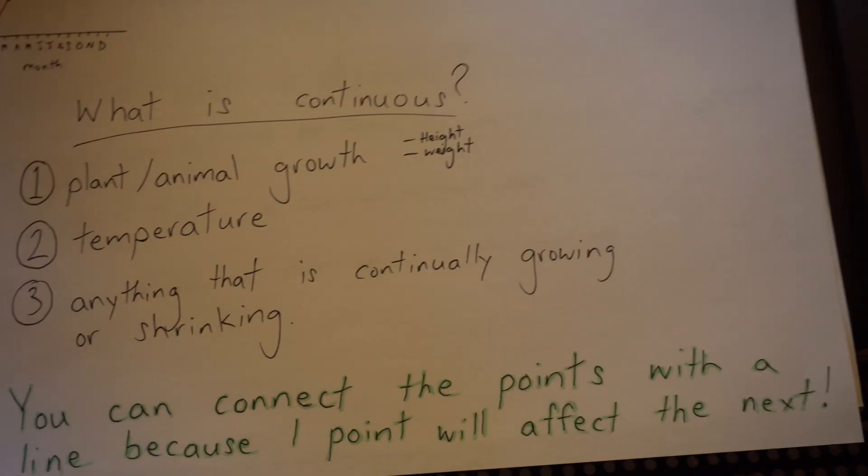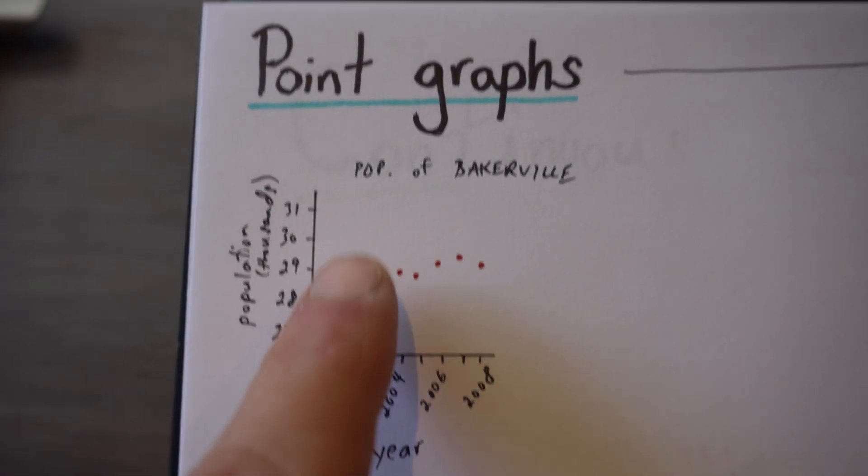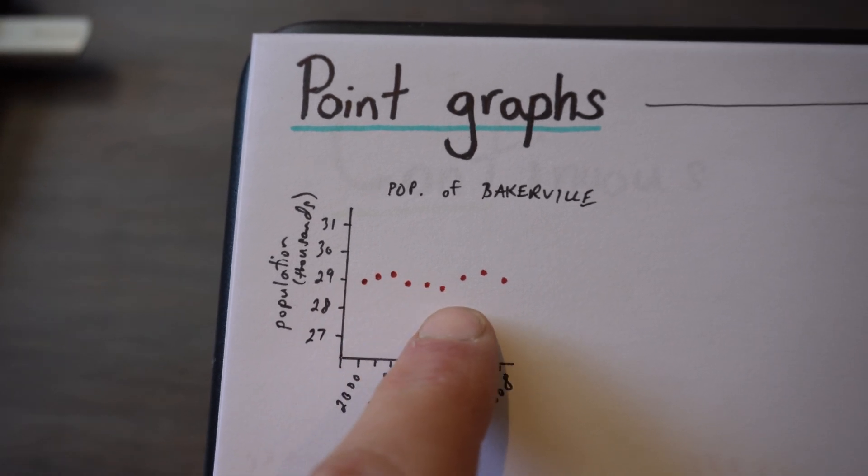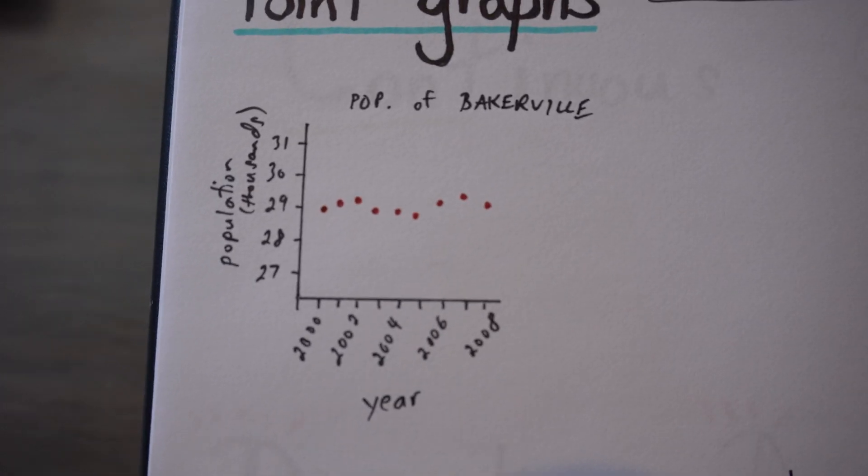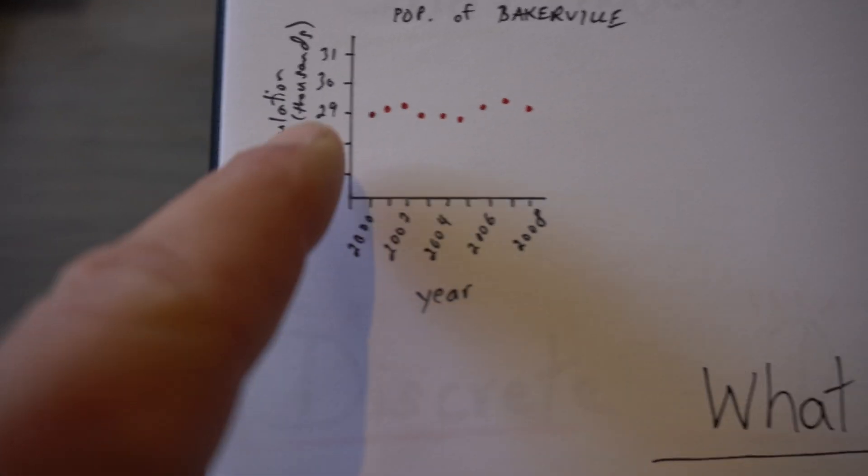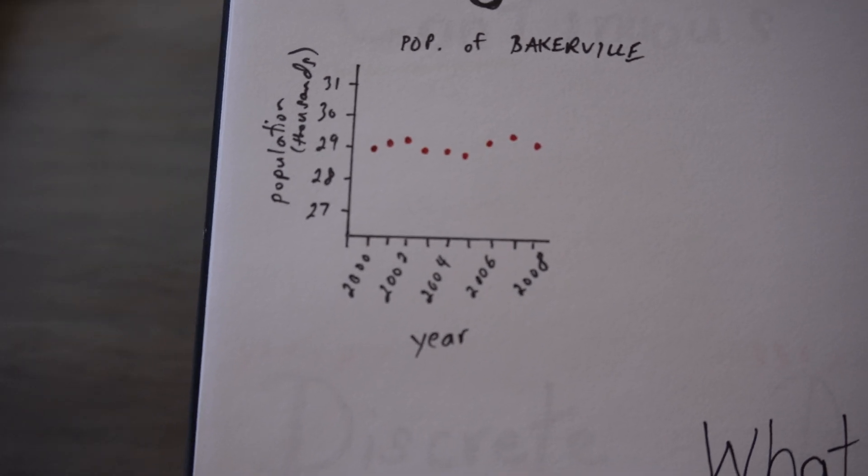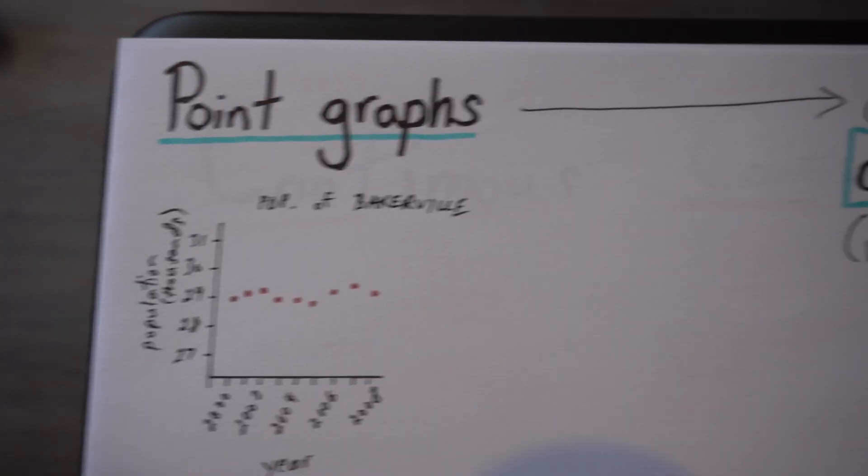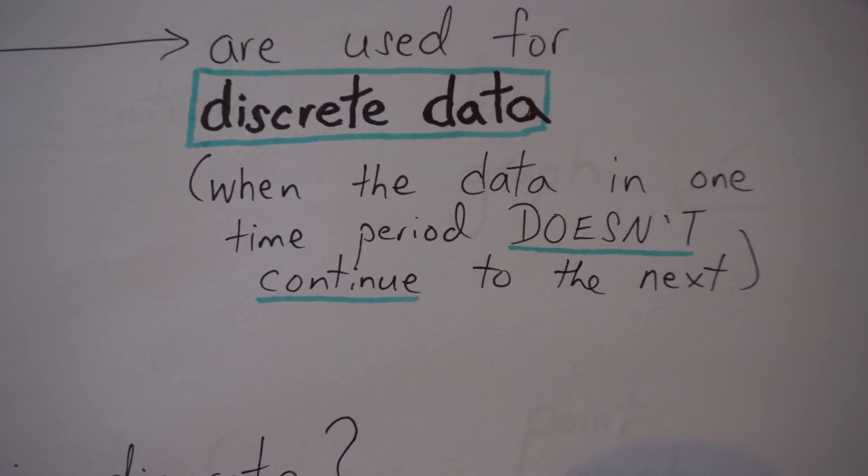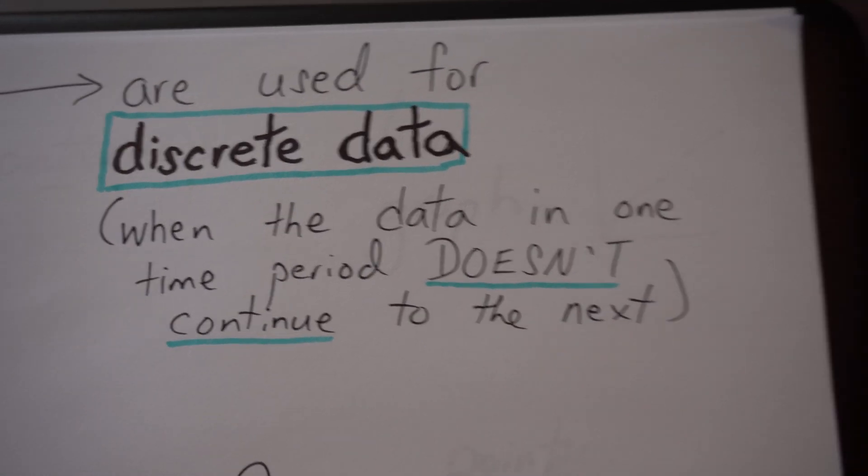The other type is called a point graph, and that's used when one piece of data does not affect the next. So we have the population of Bakerville and the year there, and we have different dots representing different times that that population was measured. Again, point graphs are used for discrete data, when the data in one time period doesn't continue to the next.